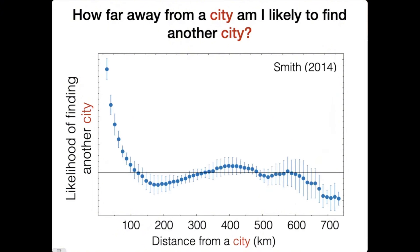For instance, very close to a city you are very likely to find another city—with a big city you often have little towns surrounding it, cities like to cluster. But interestingly, around 400 or 500 kilometers you also get this extra little bump—you're extra likely to find another city.